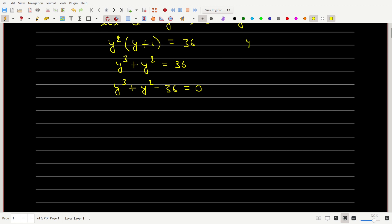If we try y equals 3, then the first term y cube is 27, y square is 9 which is 36, and the constant is minus 36. So these two cancel out. So y equals 3 is a root of this cubic equation.